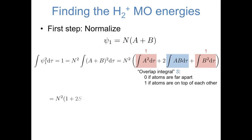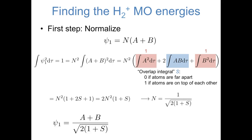So now we have values or at least symbols for all of these terms, and we can simplify things a bit and find that the normalization constant for psi 1 is 1 over the square root of 2 times the quantity 1 plus S. That means the full expression for psi 1 is shown here, and while we didn't normalize psi 2, we could do something very similar and find that the expression looks like this.